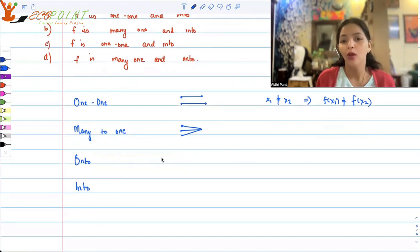Onto means that your co-domain and range are same. That is, you don't have any idle element in your co-domain. If your function is A to B, then B is not just your co-domain, but it is also the range. So you don't have any idle elements in B.